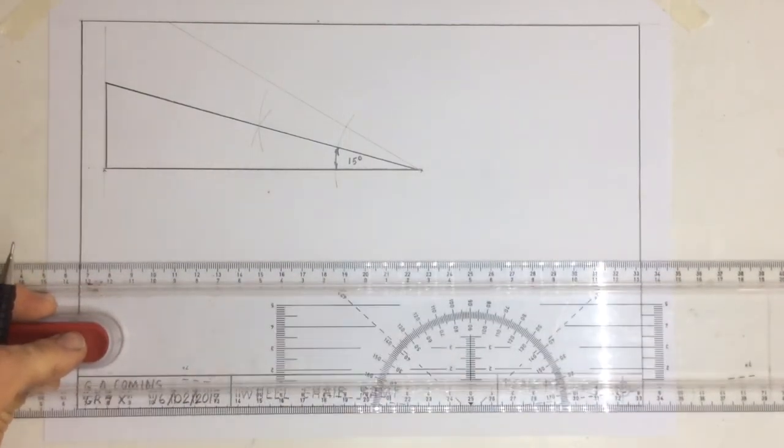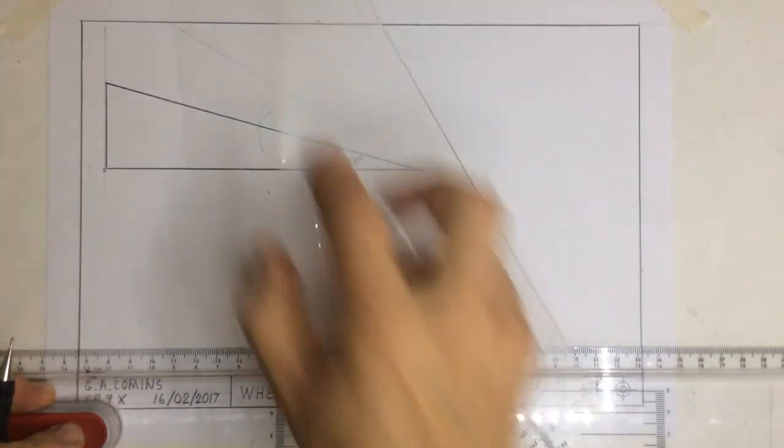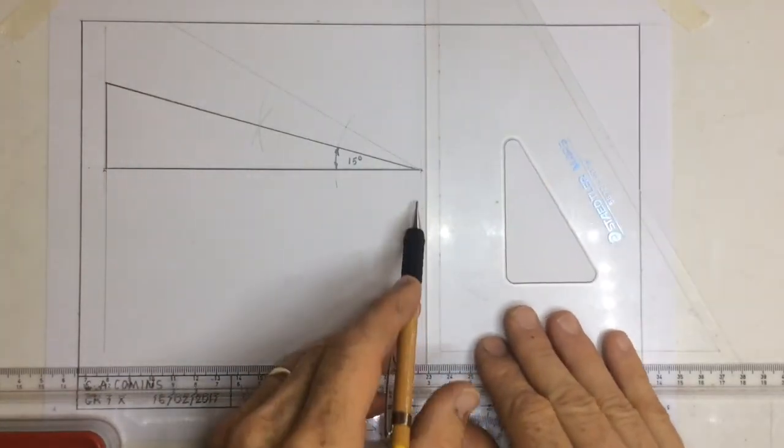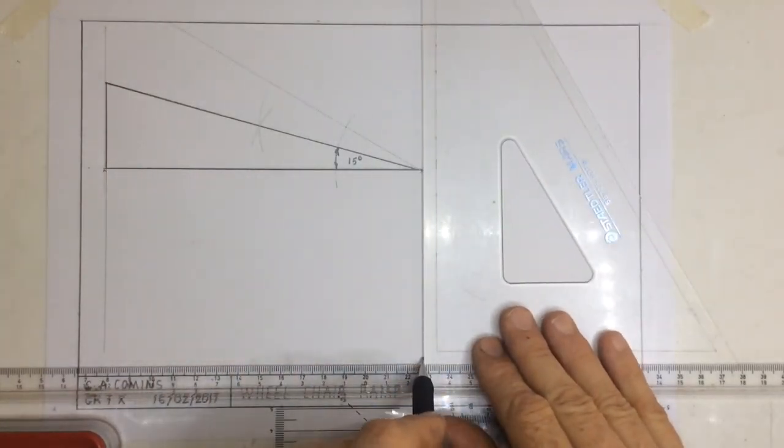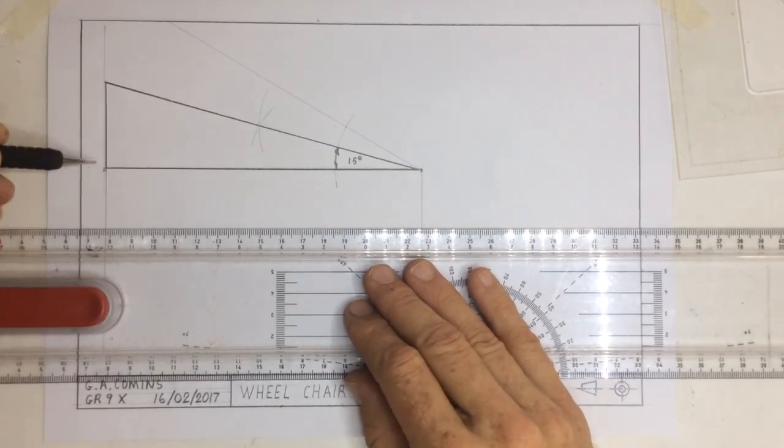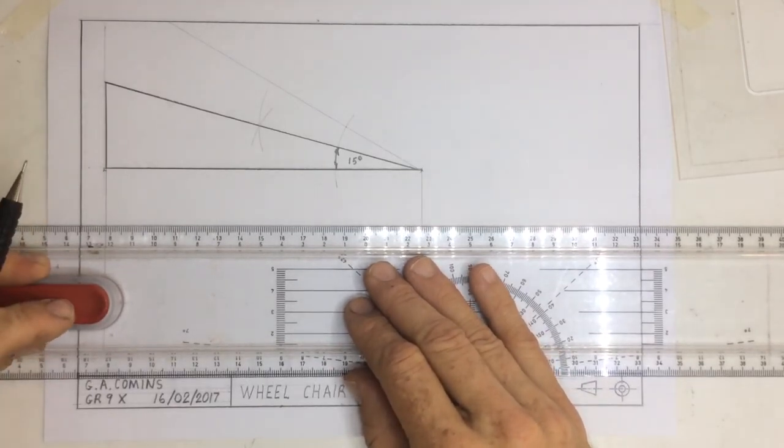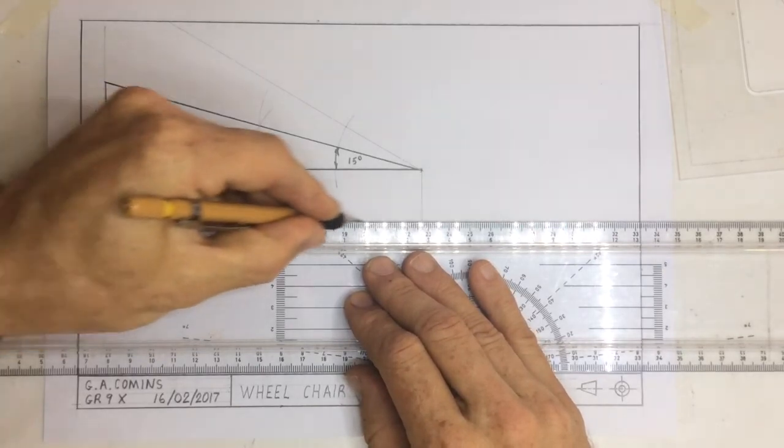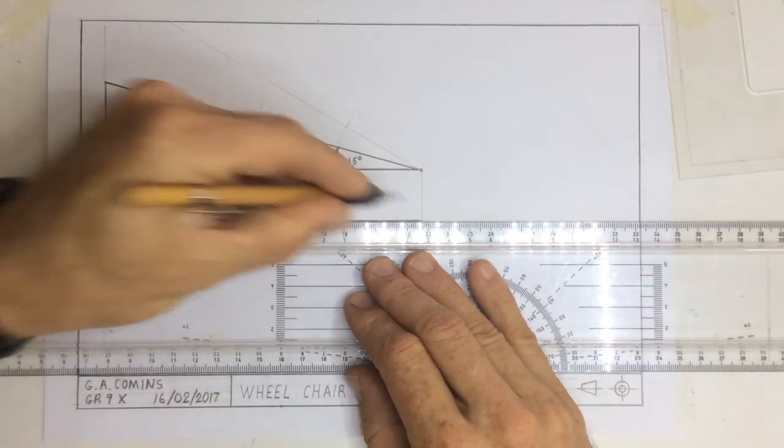Once I've done that, I need to draw a top view. I'm going to drop construction lines going down from the end there and from the end there. I'm going to draw a line approximately 20 to 25 mm away from the base. Draw a line going across.